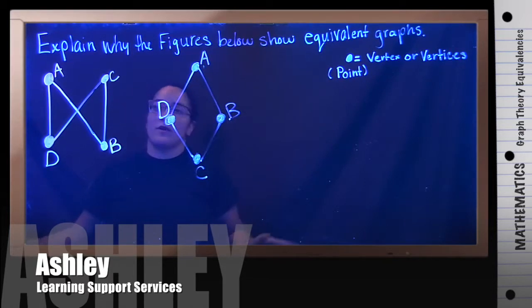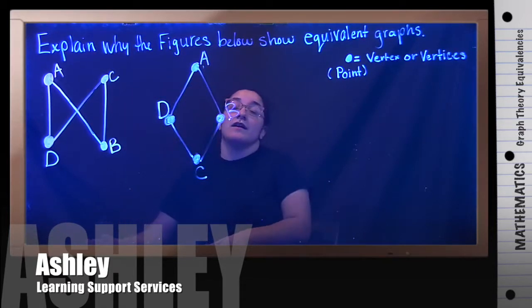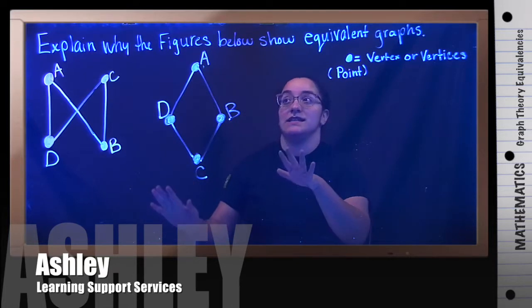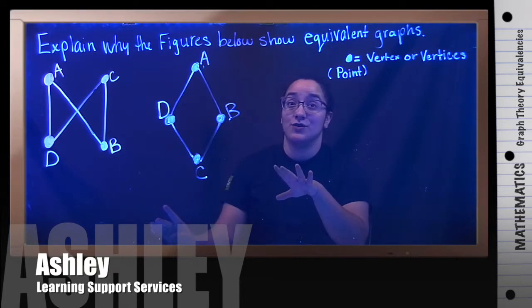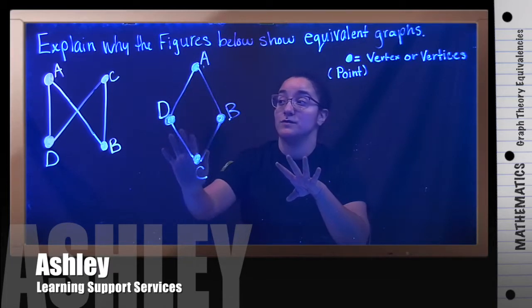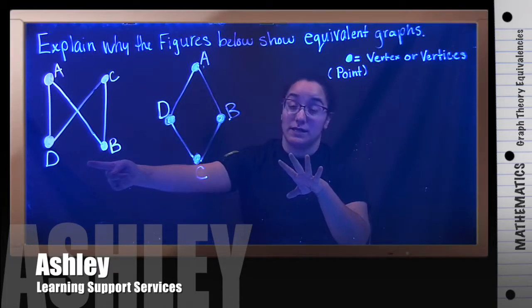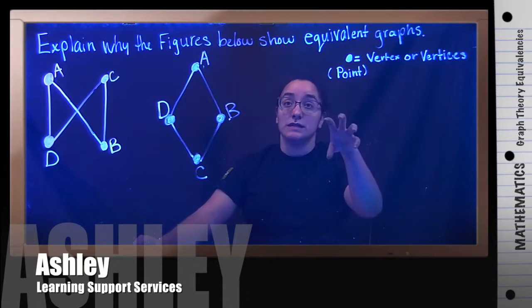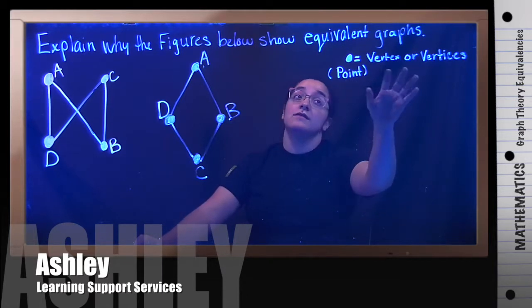We have to look first to see if each graph has a total of four vertices, because this one has four. So we need to see if that one has four vertices. Remember, vertices are the points, or vertex.